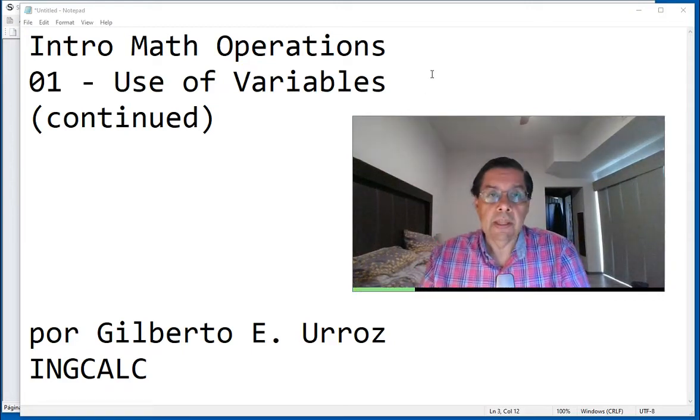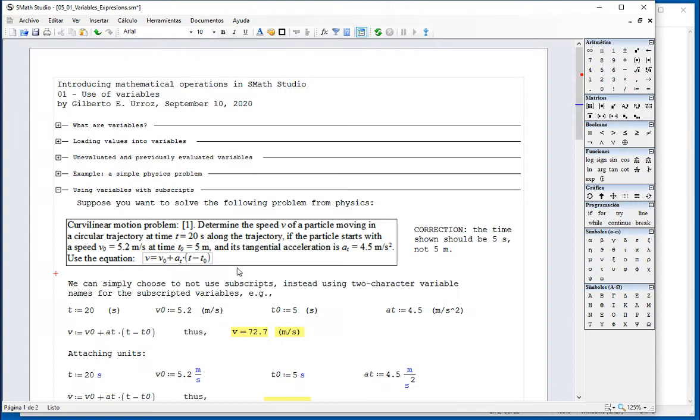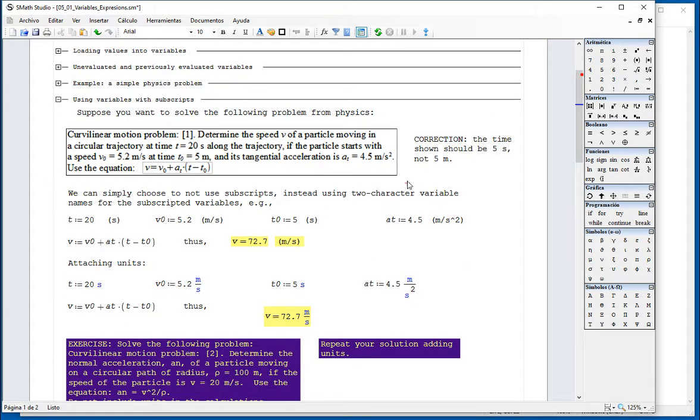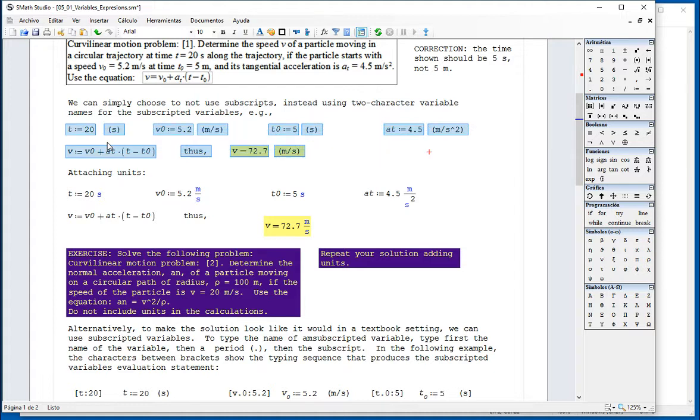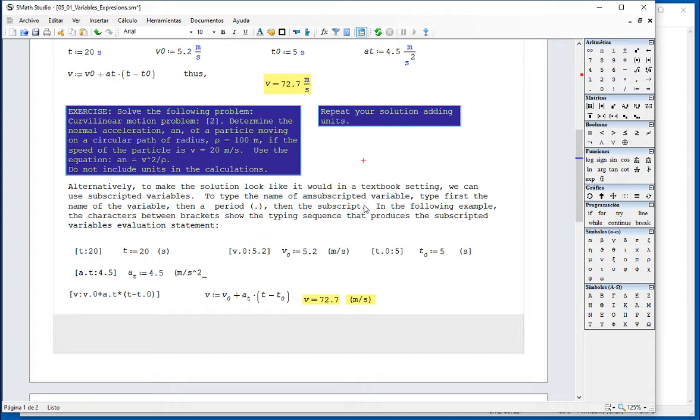This video is a continuation of the introduction to math operations. First video, use of variables. We return to the document that we had before, and now we are going to present the idea of using variables with subscripts. In the last video, we solved this problem. There's a correction to be made. The time is not 5 meters by 5 seconds, but this is a figure, so I couldn't edit it in there. And so we did the definitions, things like V sub 0, we just call it V 0, and T sub 0, T 0. There is an alternative, and we solved this without using units or using units. This is just a repeat from the previous video. And here's an exercise you may want to try. If you want to try that exercise, you want to pause this video and follow the instructions in your own SMS Studio file.